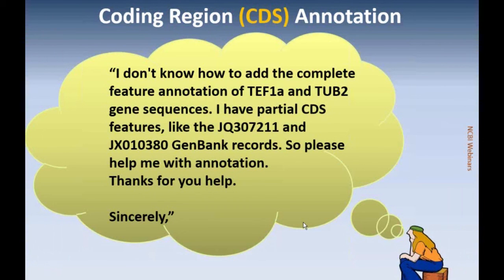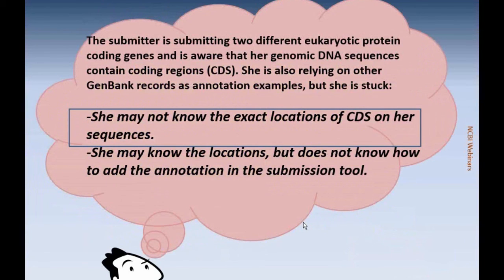We have a specific submitter who has written to us. They have two different datasets: one for TEF1A and one for beta tubulin, or TUB2. They have already identified some GenBank records similar to their datasets and are asking for help. The important thing to recognize is to understand whether the person doesn't know how to determine the CDS locations, or whether they know them but don't know how to add the information in the submission tool.